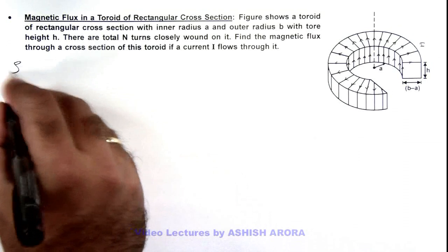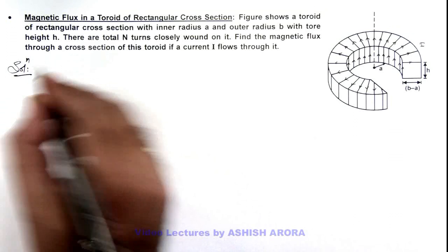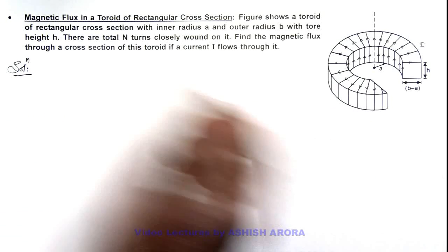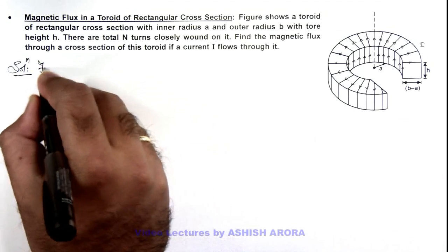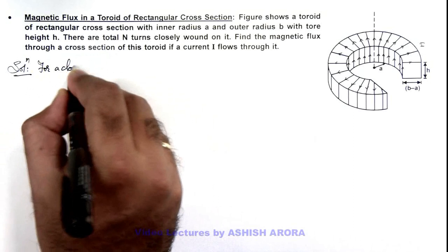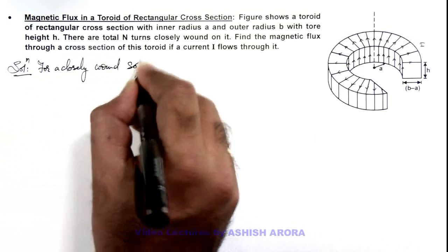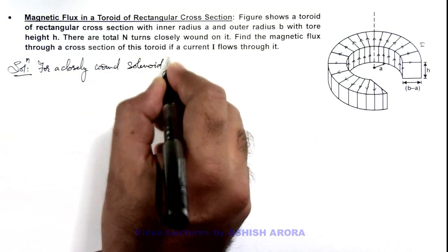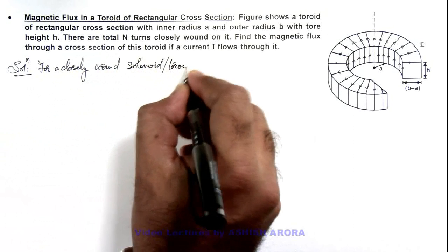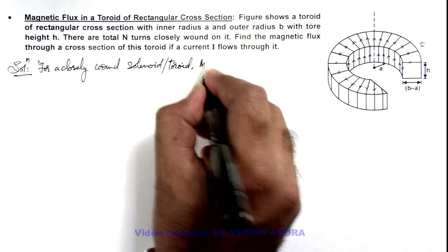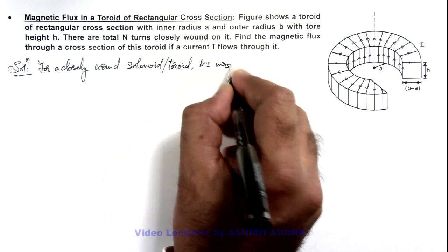Here we know well that for a closely wound solenoid or a toroid, the magnetic induction inside can be given as follows.